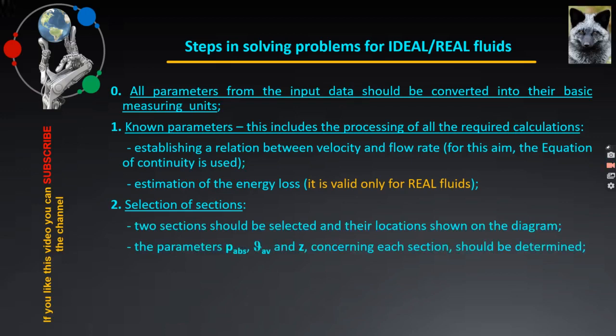After the sections are selected, they are indicated on the scheme of the task and named, where most often they are marked as section 1.1 and section 2.2. For the two selected sections, there are three specific parameters participating in the Bernoulli equation are to be described, which are absolute pressure P, velocity V, and geodetic height Z, respectively.